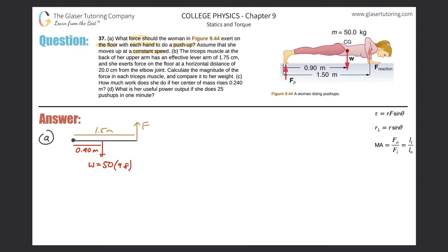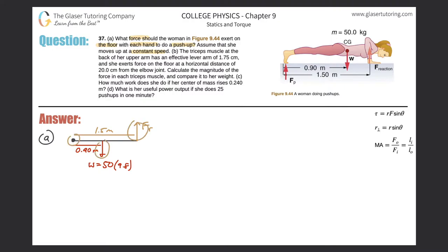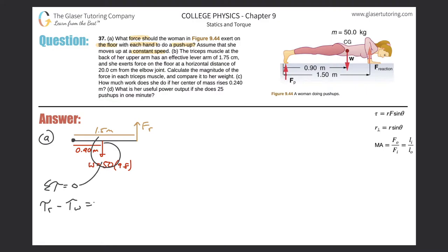We're trying to find F sub R, the reaction force. We'll solve for the total force first and then divide by two for each hand. This is a torque problem — two forces acting at a distance from an axis of rotation. The sum of the torques equals zero. The reaction torque rotates counterclockwise, so it's positive; the torque due to weight rotates clockwise, so it's negative. Torque of reaction minus torque of weight equals zero.